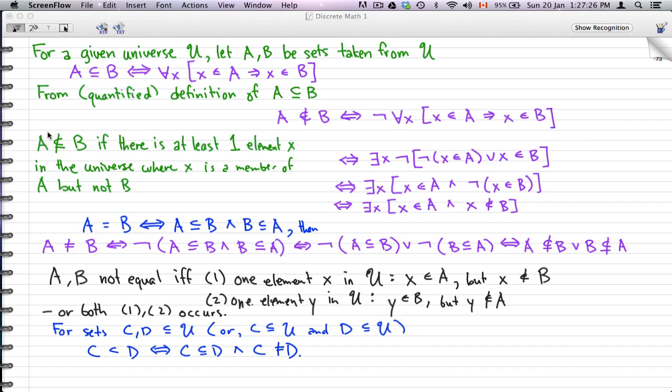So A is not a subset of B. This only happens if there is at least one element x in the universe where x is a member of A but not B.